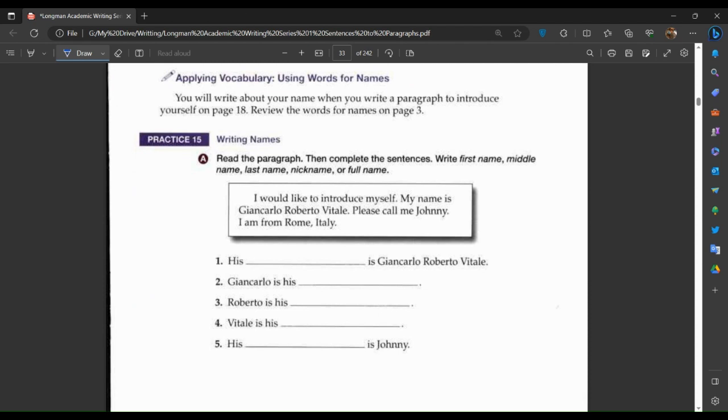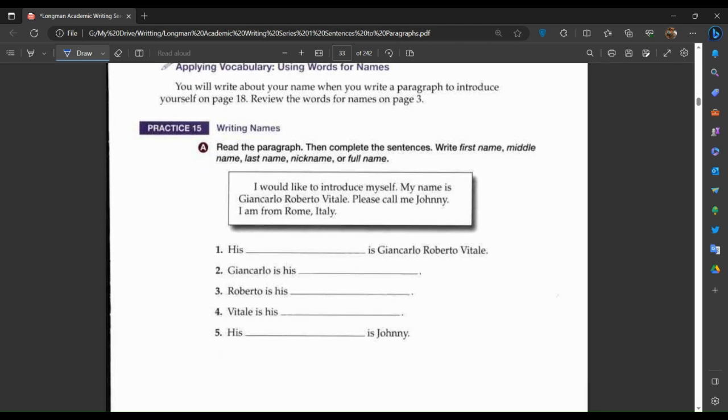Applying vocabulary using words for names. You will write about your name when you write a paragraph to introduce yourself on page 18. Review the words for names on page 3. First name, middle name, last name or family name, or nickname. Those are the words. Practice 15: writing names. Read the paragraph, then complete the sentences. Write the first name, middle name, last name, nickname, or full name.